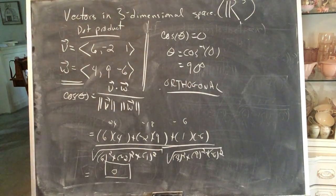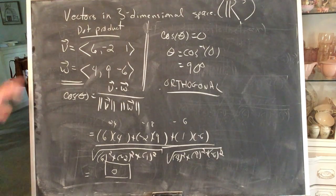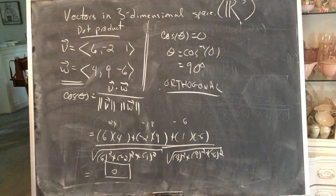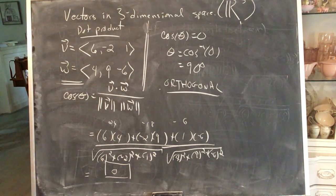So the same procedure holds as before. Two vectors are in three-dimensional space. Non-zero vectors. These must be non-zero vectors. Two non-zero vectors are orthogonal in three-dimensional space if their dot product is zero. If the dot product is zero, then the vectors are orthogonal. Again we're assuming non-zero vectors.